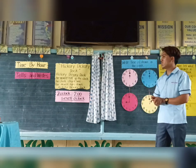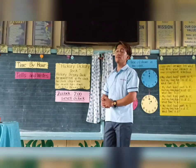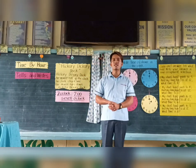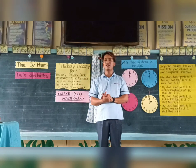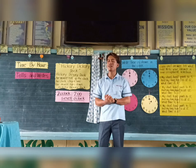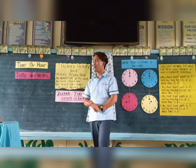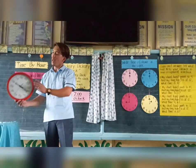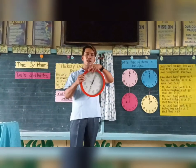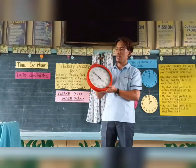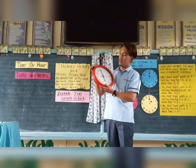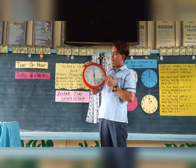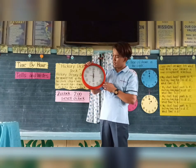Very good. So now let me ask you, what object gives the sound tick-tock? Angie — very good. A clock. So I have here a real clock. As you can see, this is the face of the clock, and it has twelve numbers: one, two, three, four, five, six, seven, eight, nine, ten, eleven, twelve.